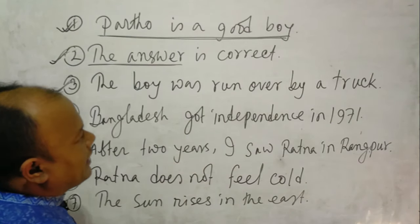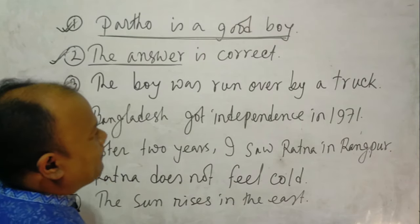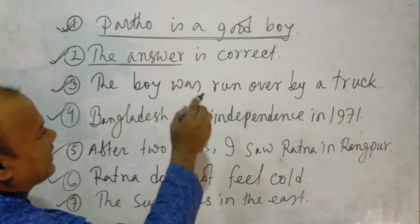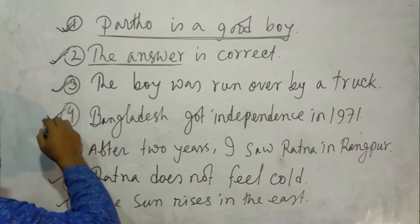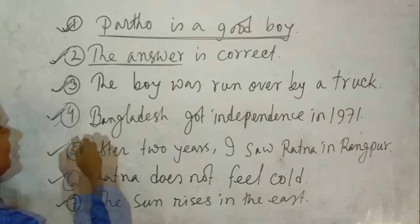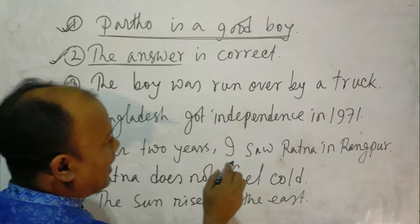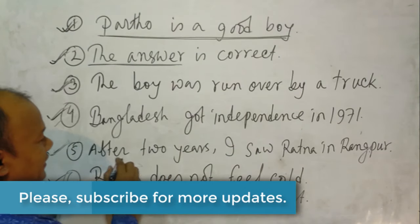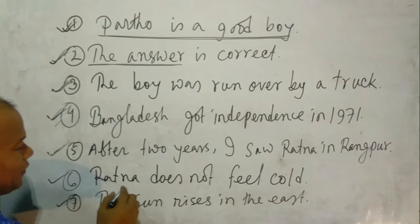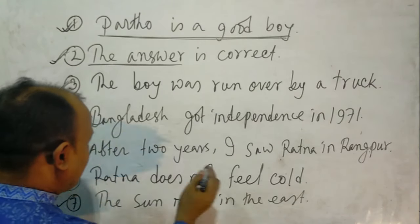Number 3: The boy was run over by a truck — this sentence expresses an accident; it describes the accident of the boy. Number 4: Bangladesh got independence in 1971 — this sentence expresses the history of Bangladesh. Number 5: After 2 years, I saw Ratna in Rangpur — this sentence expresses an incident or event. Number 6: Ratna does not feel cold — this sentence expresses the feeling of Ratna.